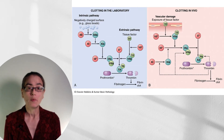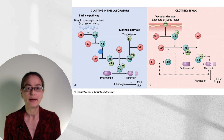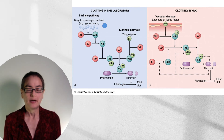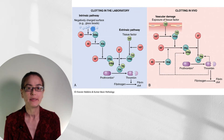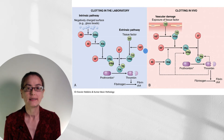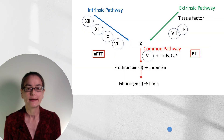Let's take a step back and talk about what we look at in the laboratory. We can assess two different pathways: the intrinsic pathway on the left, the extrinsic pathway on the right — they both unite in the common pathway. To measure the intrinsic pathway, we add some negatively charged surface, like glass beads, and measure the time it takes to get to the fibrin clot. To assess the extrinsic pathway, we add tissue factor, which helps us assess factor VII and activation of factor X.